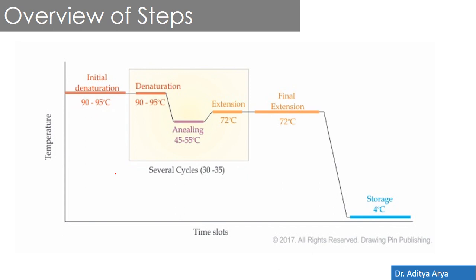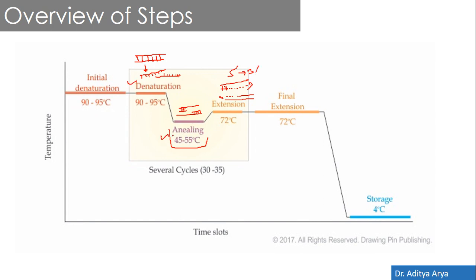Looking at the overall steps of PCR, it is a series of three important steps. First, denaturation: the double-stranded DNA is heated to a very high temperature to separate it into single strands by breaking hydrogen bonds. This is followed by annealing: small primers are added on either side of the target region at a lower temperature. Then extension: the primers are extended by Taq polymerase at around 72°C, adding nucleotides to synthesize new strands in the 5' to 3' direction.